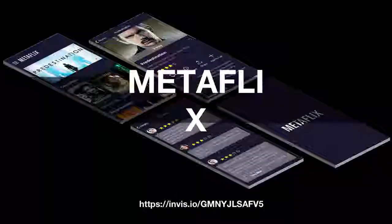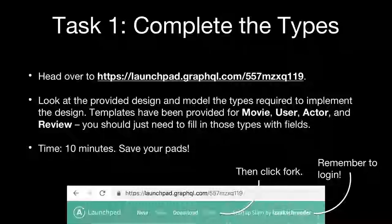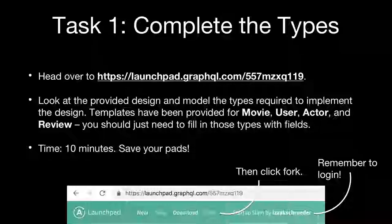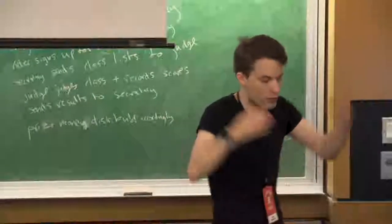This is the thing we're going to be building the API for: our non-copyright-infringement movie app called Metaflix. The first task is completing the types. We're going to look at those designs and finish implementing the types. There's a link to something called Launchpad, which lets you create a GraphQL server in your browser. You sign in through GitHub, click the fork button, and you'll get your own sandbox to play in.